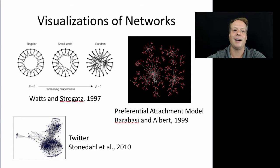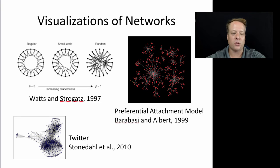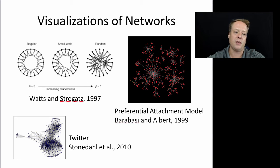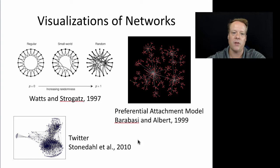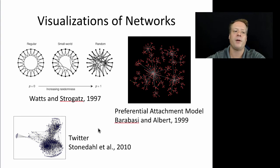Some people are just very friendly, so they have lots of friends. In NetLogo you can also pull in real-world data. We built a NetLogo model where we pulled in Twitter data and looked at the relationships between individuals on Twitter. Interestingly, that network has some properties of the small world network and some of the preferential attachment network, but isn't perfectly represented by either one.